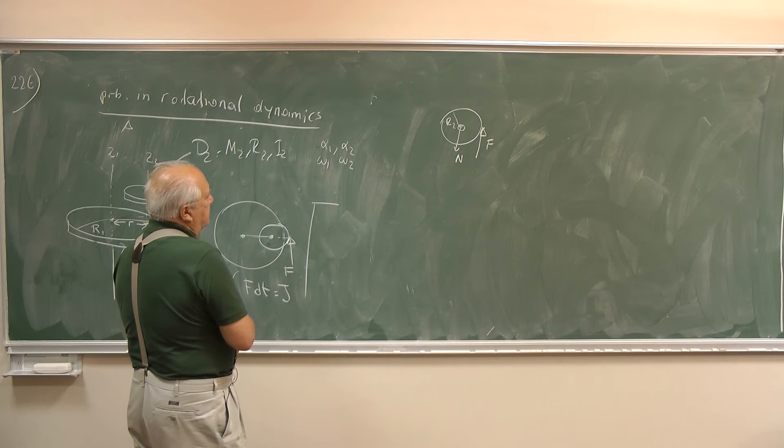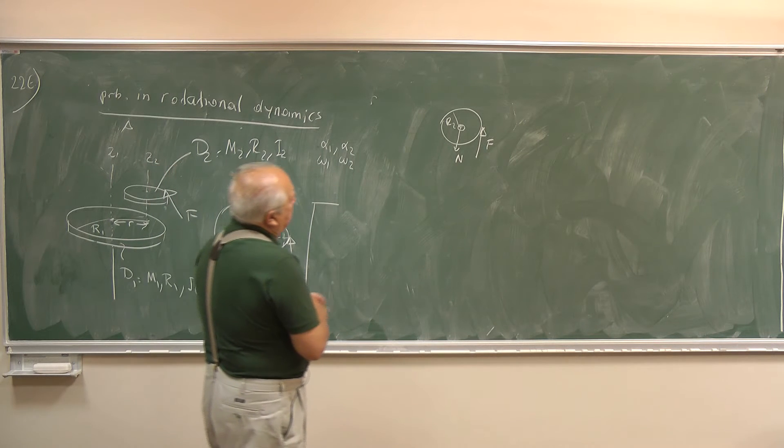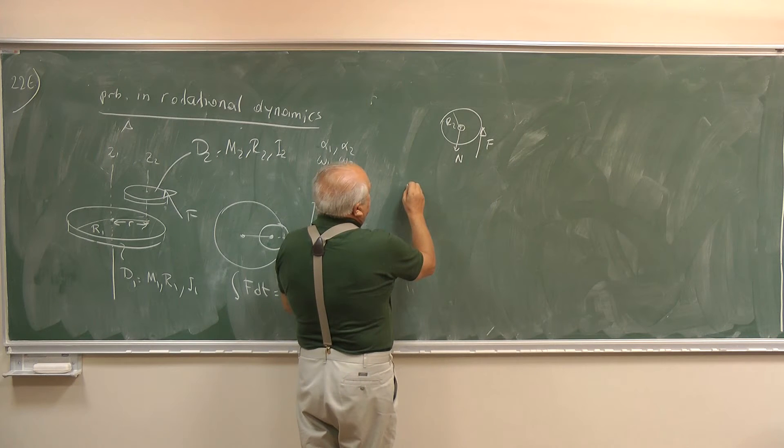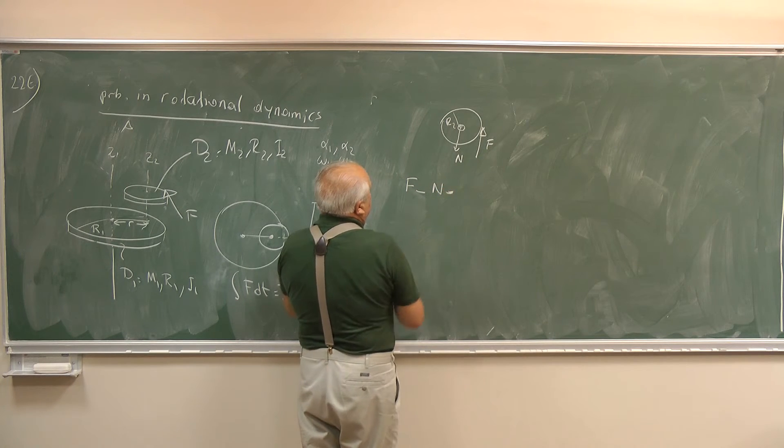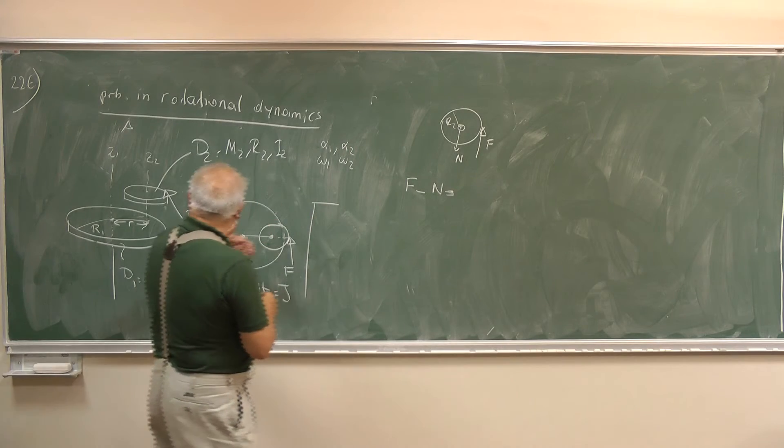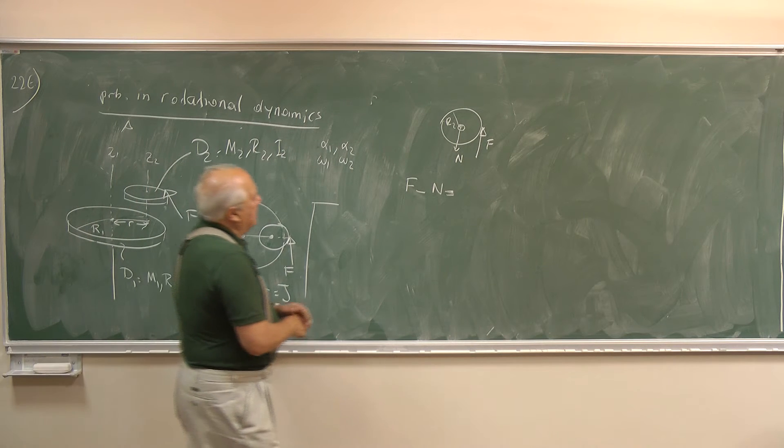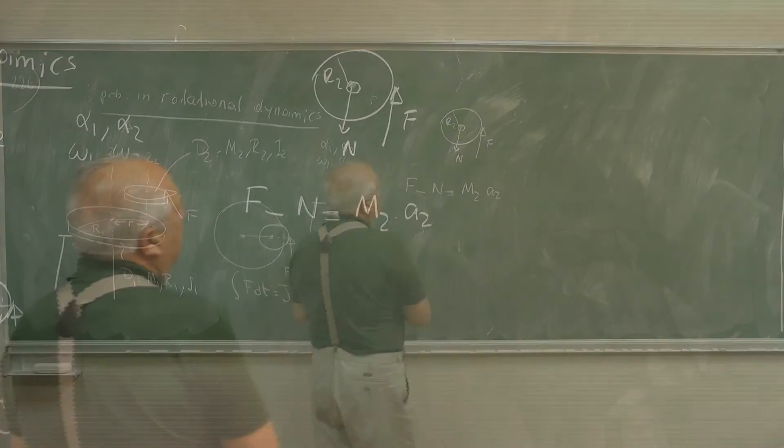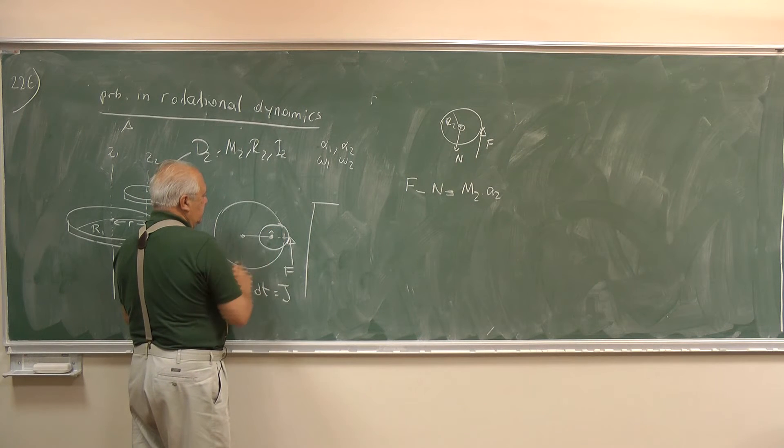And the equation of motion for the disk is easy to write. F minus N, that's the net force in the horizontal direction, the horizontal plane acting on the disk, that is M2 times A2. A2 is the acceleration of the mass M2, this one.